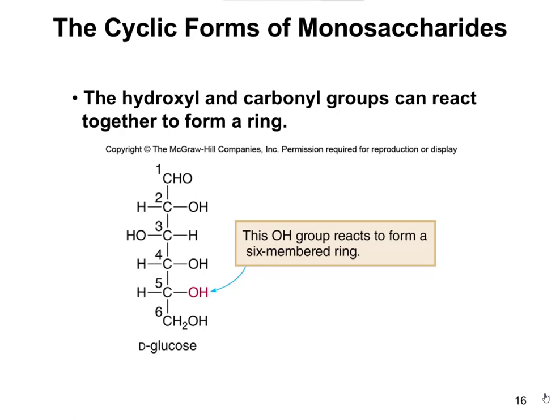Monosaccharides are frequently seen drawn in a linear form like you see on the screen here. However, most commonly they're found in a cyclic or ring form. When I say most commonly, it's somewhere around 99.95 to 99.98% of the sugars found in your body actually exist in the cyclic form. Because of that, we want to make sure we can draw and recognize that cyclic form.